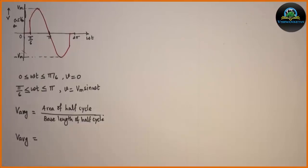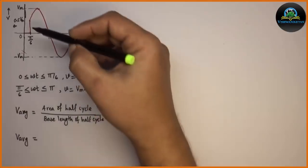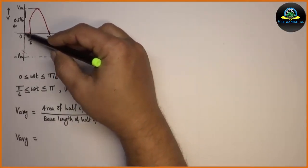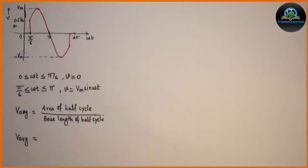From our waveform we can write down area of half cycle is area under this half cycle with base length of 0 to pi. So area of half cycle is integration of V with respect to d omega t from 0 to pi and base length of half cycle is pi.